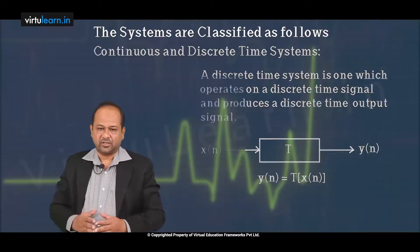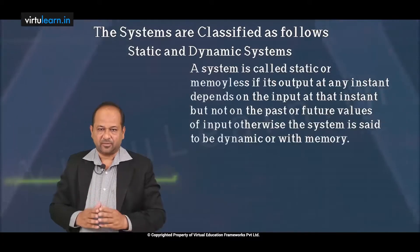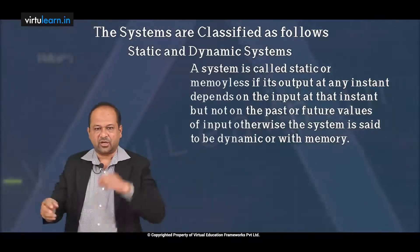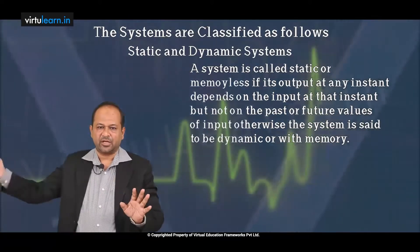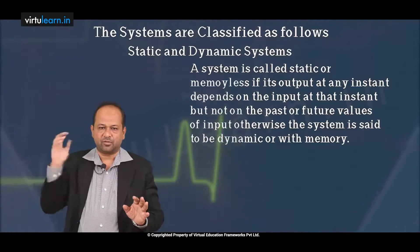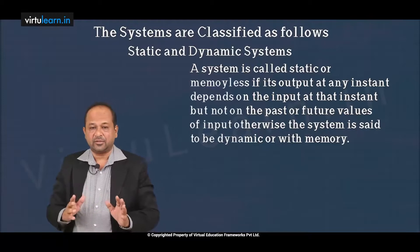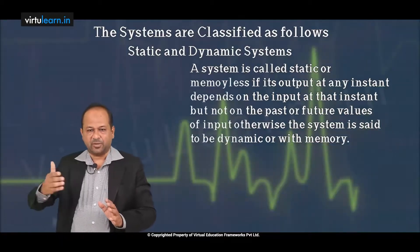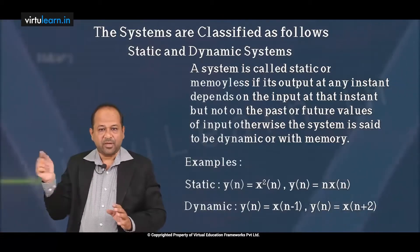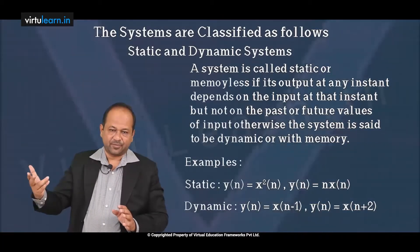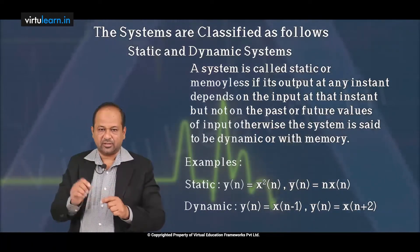Similarly, static means memoryless — no memory. If input is there, output will be there; if there is no input, there is no output. It does not depend on past values. Present input gives present output — that is memoryless, that is static. Dynamic means the system has some memory; it depends on past values also, for example y of n equals x of n minus x of n minus 1, where n minus 1 means the previous value, the delayed last value. So that is a system which has some memory — that is a dynamic system.